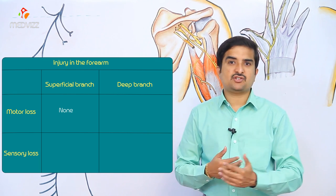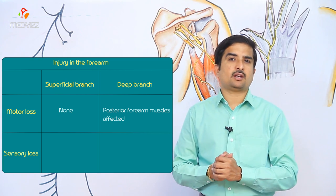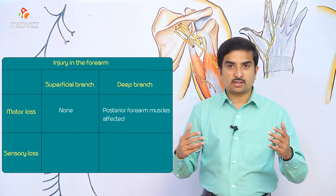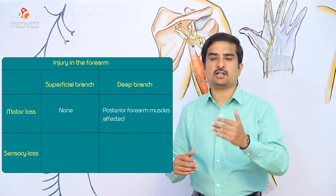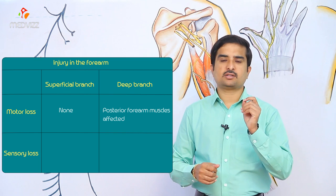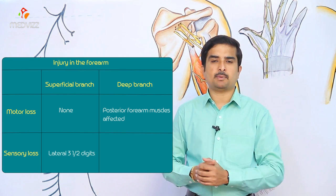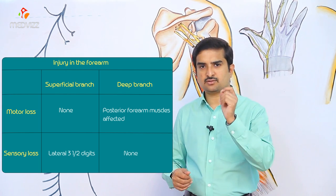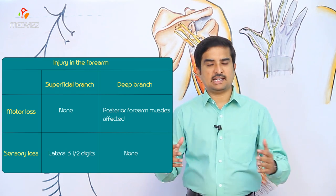If the deep branch is involved, the majority of posterior forearm muscles are affected, but wrist drop does not occur. Injury to the superficial branch causes sensory loss affecting the lateral three and a half digits and the associated palmar area, with no motor symptoms because the nerve is sensory in nature.